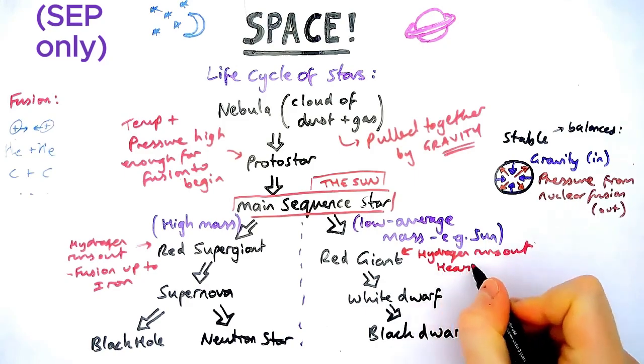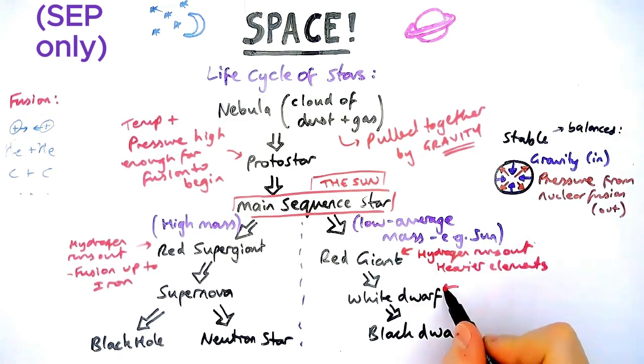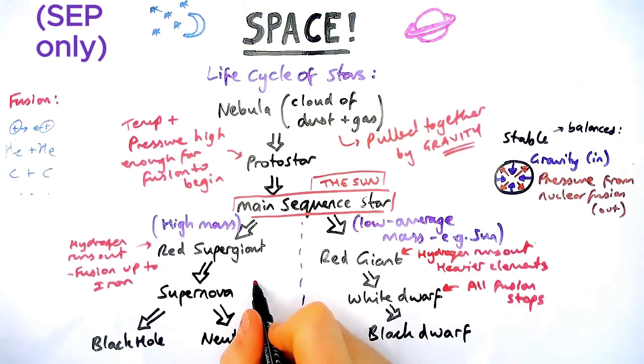In a red giant, so like our Sun, you get heavier elements, but you won't get up to iron. After this point, all fusion will stop at a certain point for a low to average mass star. At that point, it shrinks back down, becomes a white dwarf. Then even that radiation ceases, it becomes a black dwarf.